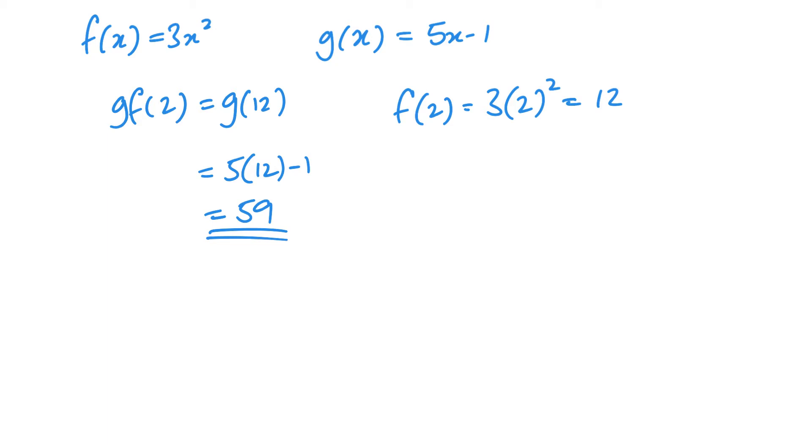Now sometimes you might see gg of 3. And what that means is you apply g of x and then apply it again. So if I apply g of 3, I would get 5 lots of 3 minus 1. So that's 14. So this is now the same as g of 14. So I would do 5 lots of 14 minus 1. 5 fourteens is 70, minus 1 is 69. And that's how I deal with numbers in my composite functions.